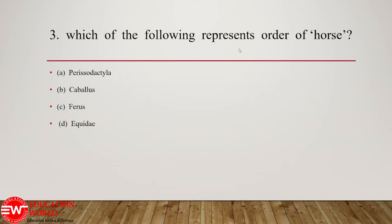The third question: which of the following represents the order of horse? The order of the horse is Perissodactyla — they have an odd number of toes on their limbs. The other options B, C, and D indicate various species of horse which are available. Equidae is the family of the horse; it is not the order. The order is Perissodactyla — they have odd toes.